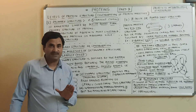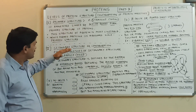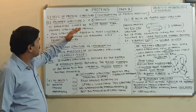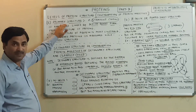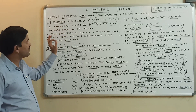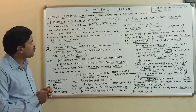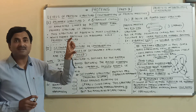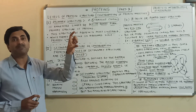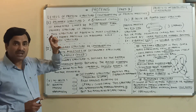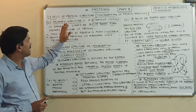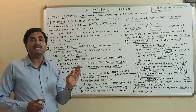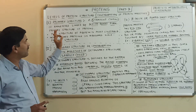The four structures are: the primary structure, secondary structure, tertiary structure, and the quaternary structure. The primary structure is a straight chain, or linear chain, of amino acids. When many amino acids are held together with the help of peptide bonds in a linear fashion, that represents the primary structure.